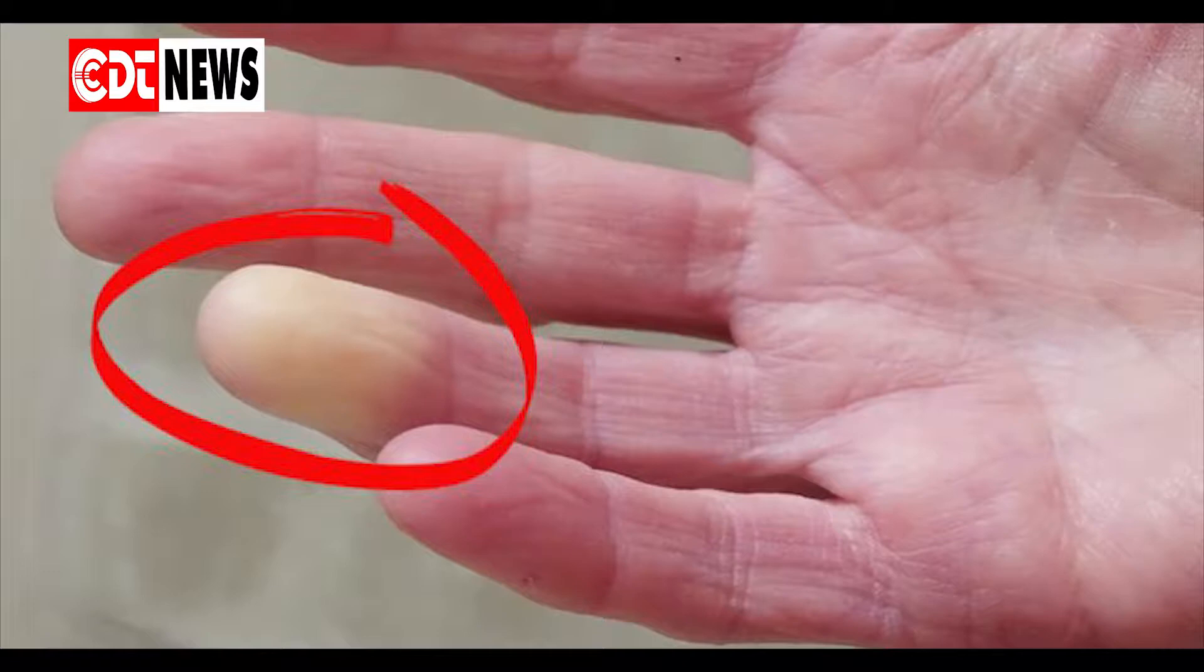In most cases, Raynaud's affects your fingers and toes, but you may also notice symptoms in your ears, nose, lips and nipples. When your blood vessels narrow, little or no blood flow can reach your extremities. This causes your skin to appear white at first, and then blue until the blood flow returns.